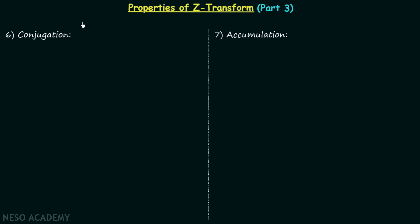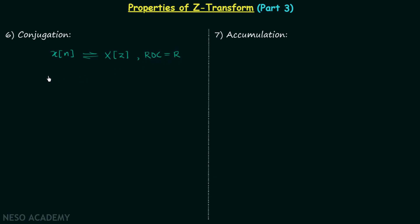We are going to have a discussion on conjugation and accumulation properties of the Z-transform, and we will begin with the conjugation property. We will first understand the conjugation property and then prove it. I have taken one discrete time signal Xn, and let's say this signal has a corresponding Z-transform equal to Xz with region of convergence equal to R.